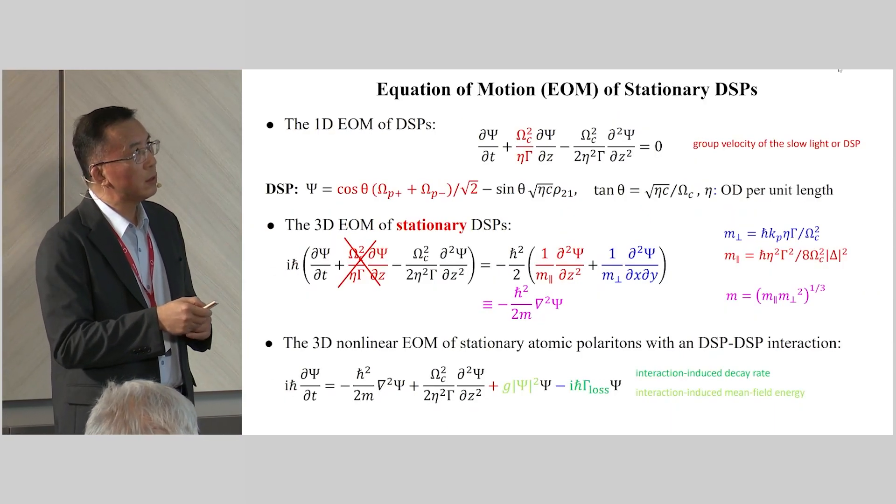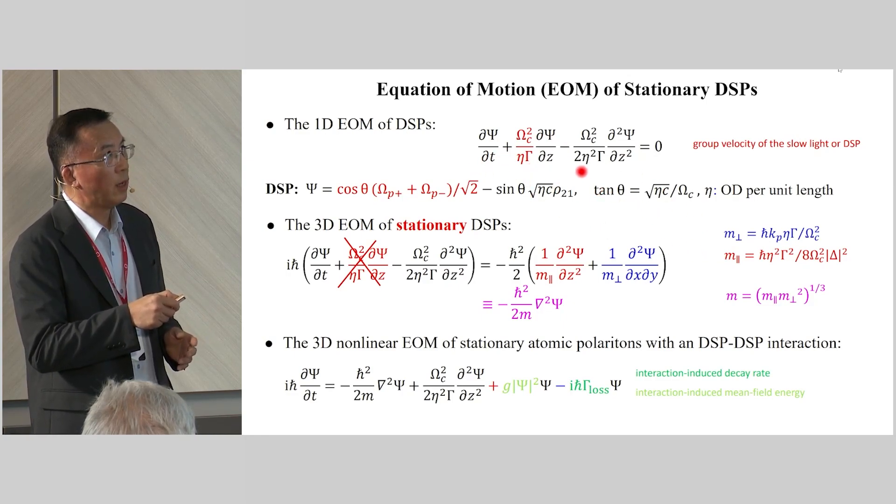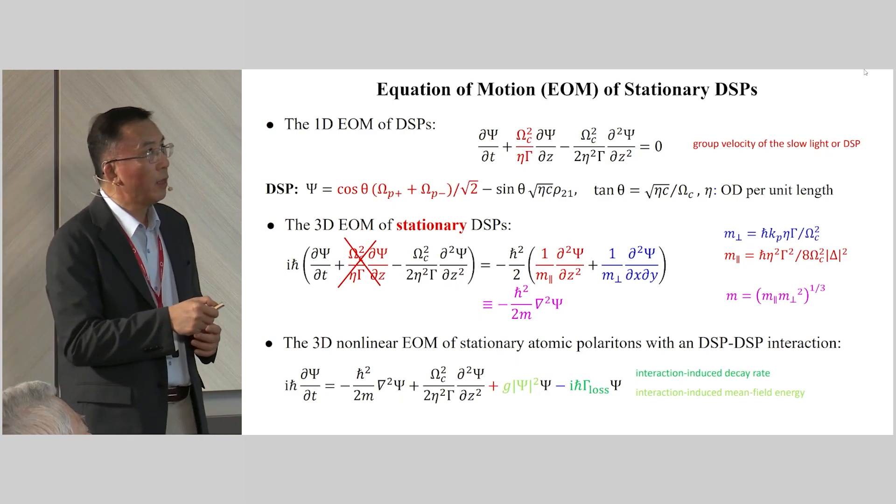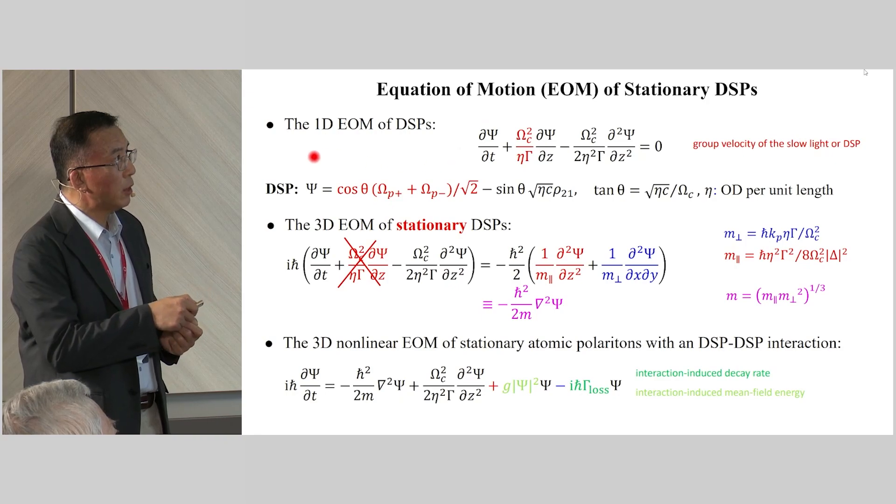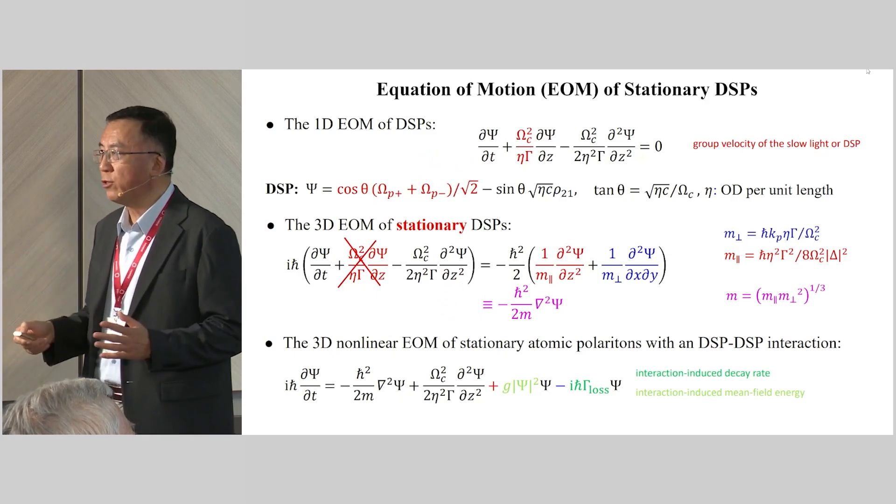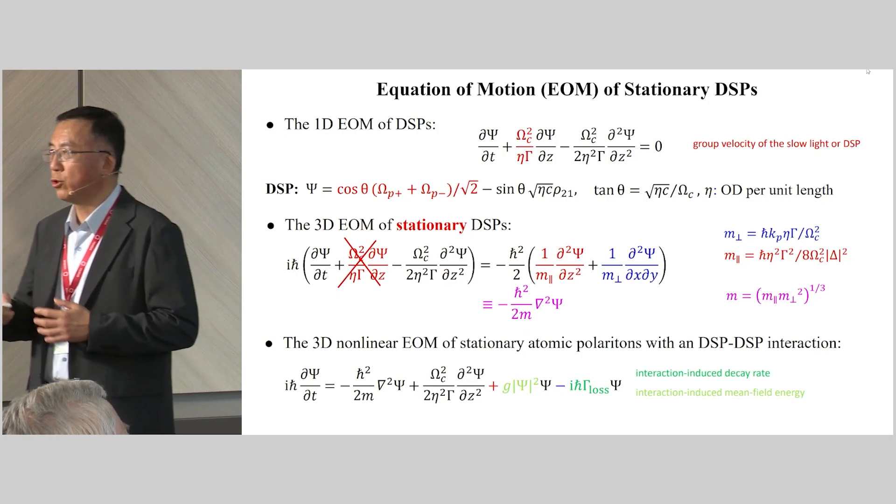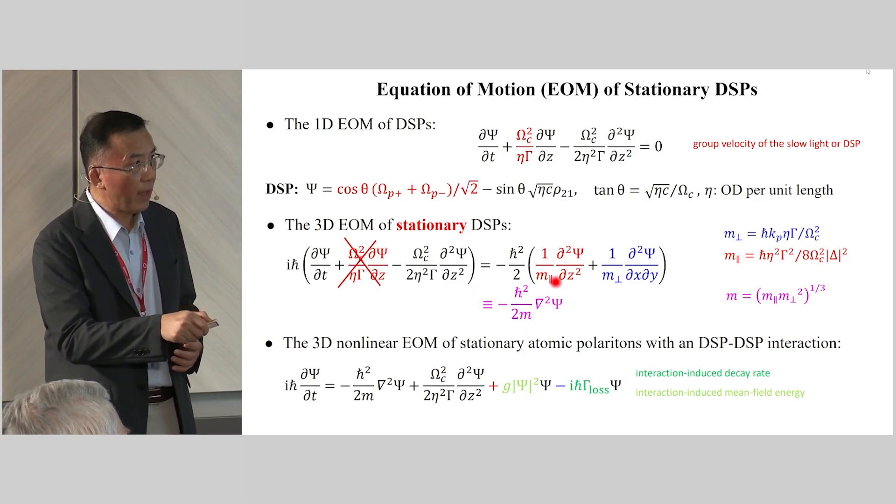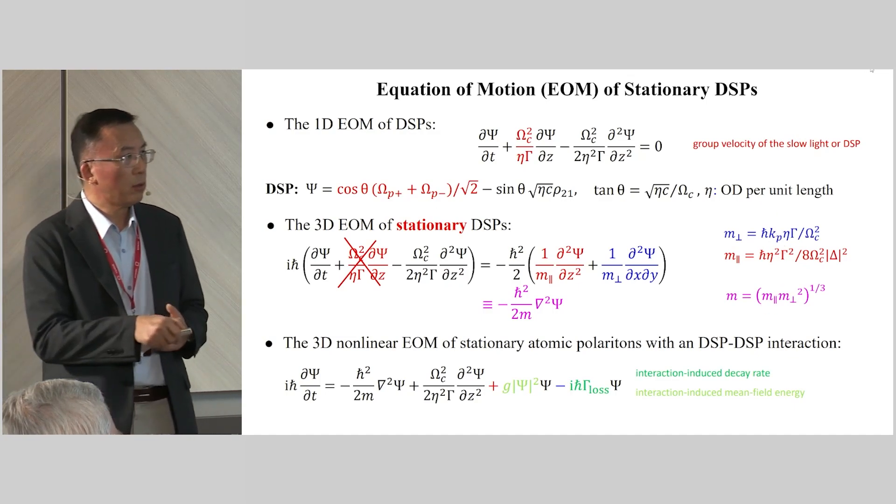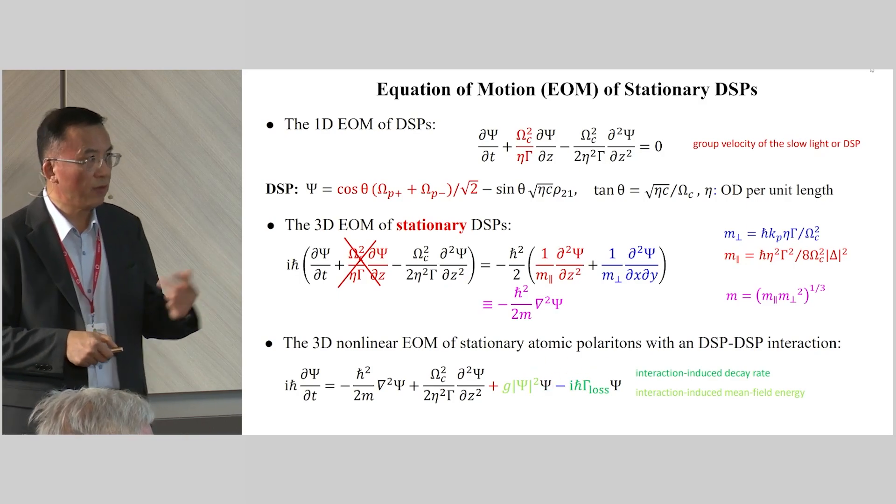For the moving dark-state polariton DSP, the equation is just given by this one. It's also the slow-light equation, and this term is the group velocity of slow-light. If we create a stationary DSP, the wave function of the DSP has the forward and backward components. If we consider the three-dimensional Maxwell equation, the equation of motion of stationary DSP is like the Schrödinger equation very much, with the mass of a particle given by this expression here. If there exists interaction between DSP, the Schrödinger equation will become nonlinear, where this term gives the mean field energy, and this term gives the loss of DSP.